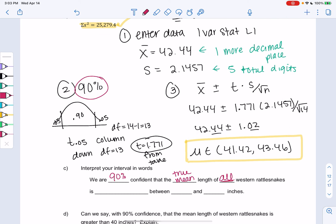The mean length or the average length of all Western rattlesnakes, all is an important word, is somewhere between those two numbers, is somewhere between 41.42 and 43.46 inches.